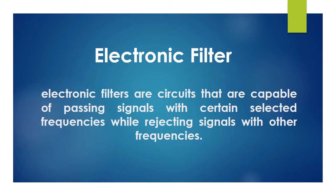We also have electrical and electronic filters. Electronic filters are circuits that pass signals with certain selected frequencies while rejecting signals with other frequencies. We have certain selected frequencies that we want to pass, and other frequencies we want to remove from the circuit.